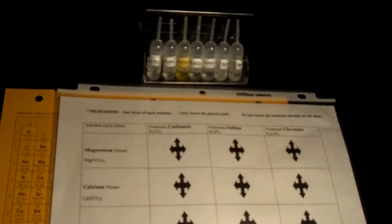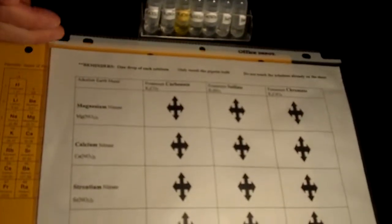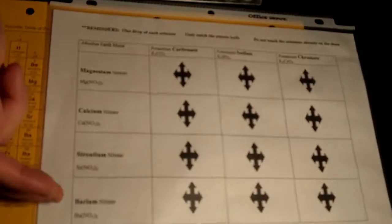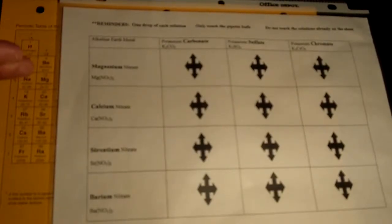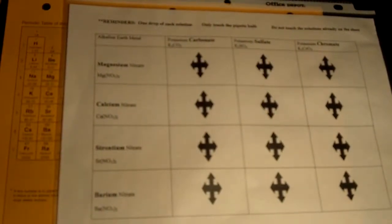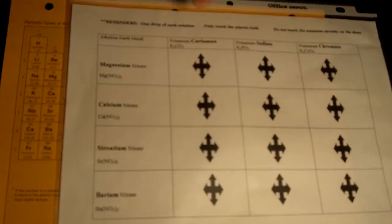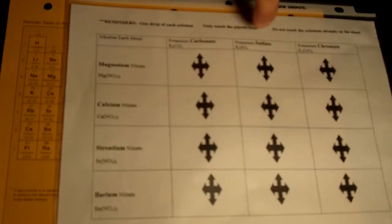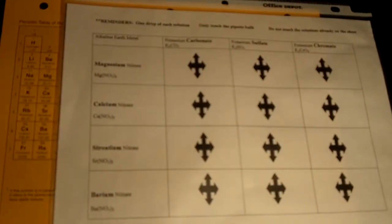The reactions will be executed on a small scale reaction surface, and that's the surface right here. We have the alkaline earth metal compounds down that particular first column, indicating the rows will have each of those, noting that we have magnesium, calcium, strontium, and barium in group 2 of the periodic table. Down each row we have potassium carbonate, potassium sulfate, and potassium chromate, each with the formulas as indicated in the data table on the second side of your lab.